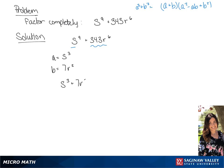If we put this into the formula that's in the top right-hand corner, we'll get s cubed plus 7r squared times s to the 6th minus 7r squared s cubed plus 49r to the 4th power.